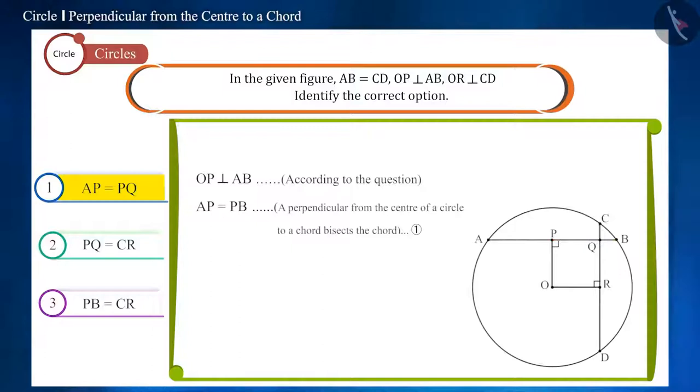In the figure, you can see that these four points are in a line. Point Q lies on the line segment PB. This means PB is formed by joining PQ and QB. Therefore, PB will be larger than PQ. And we saw that AP is equal to PB. So, AP cannot be equal to PQ. Therefore, this option is incorrect.